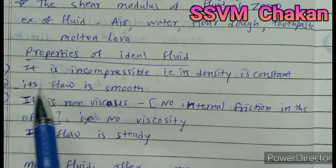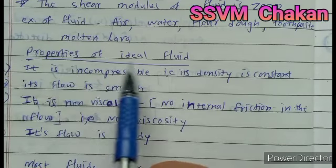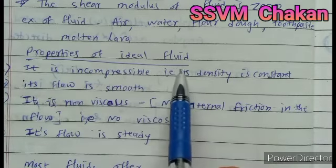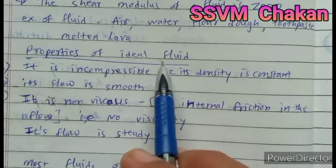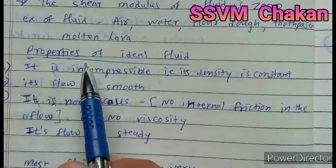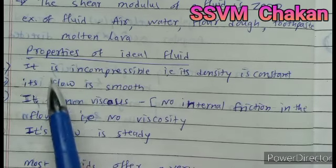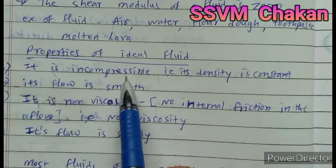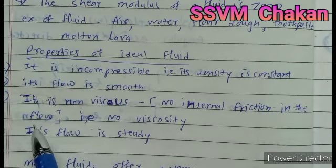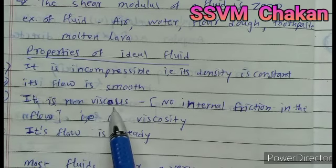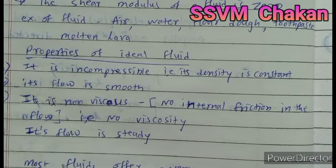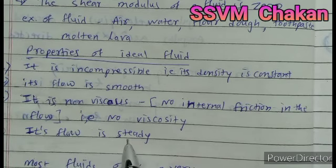There are some properties related to the fluid. First we consider the properties of ideal fluid. This ideal fluid cannot exist in nature or be used in daily life. But the properties are: first, it is incompressible — its density is constant, its flow is smooth. Third, it is non-viscous. We will see what viscosity means later in this lesson. Fourth, its flow is steady.